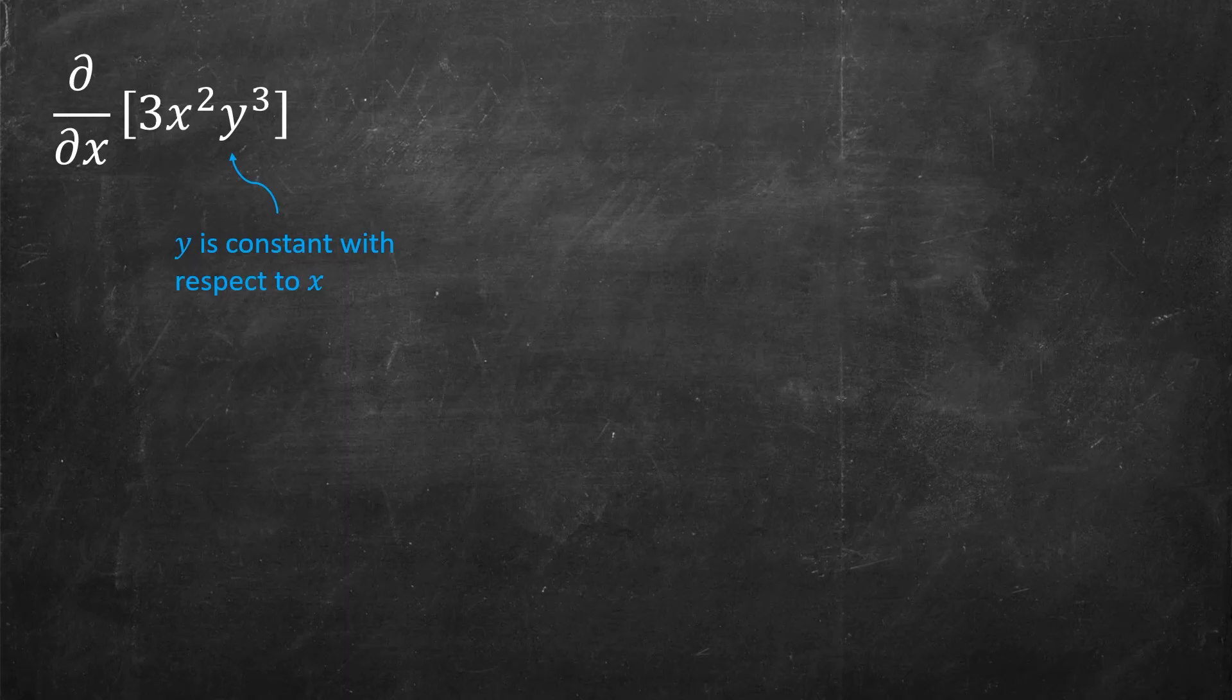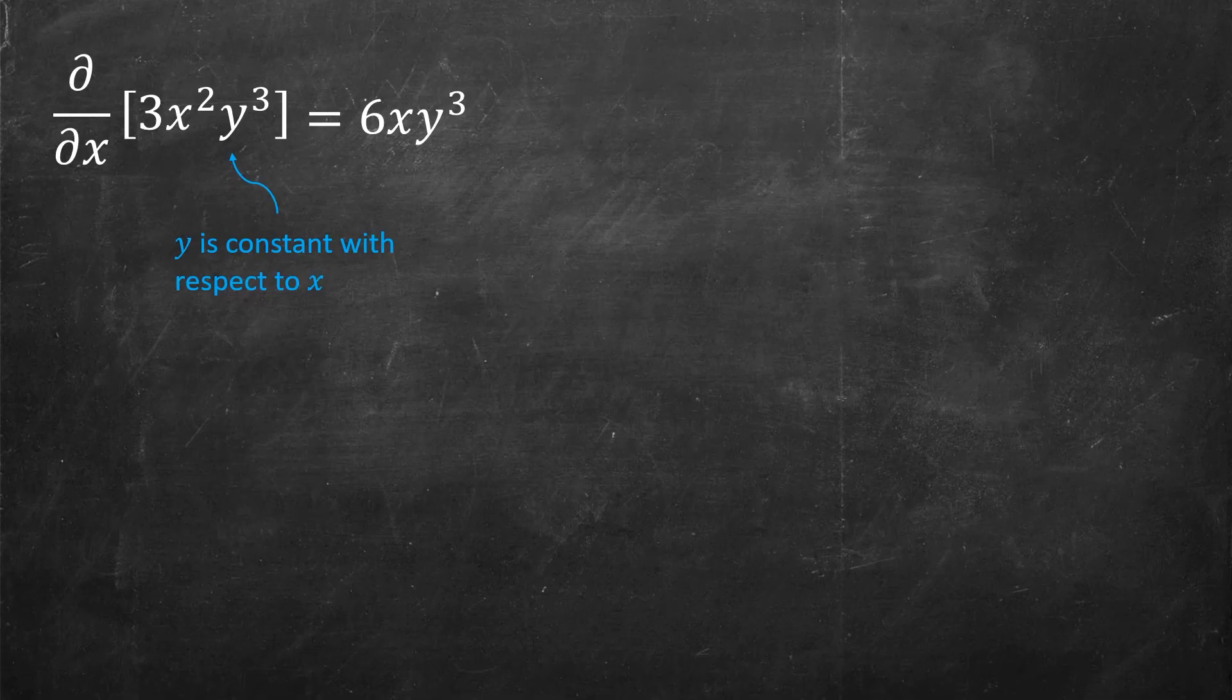In which case, 3x² times 7 is easy, you just do the power rule, you say it was 6x times whatever the constant was, in this case, y³. So computing partial derivatives is just a question of everywhere there is a y, you just imagine it's a constant, you take the derivative with respect to x as you would have done before.